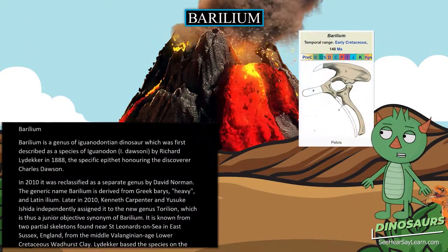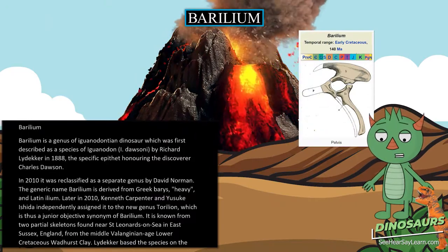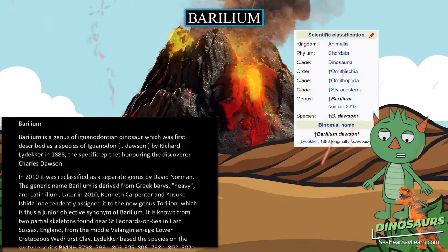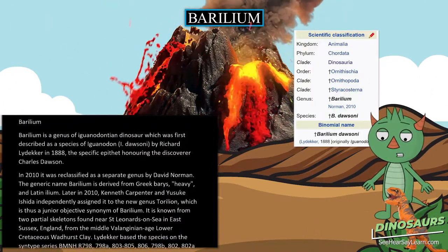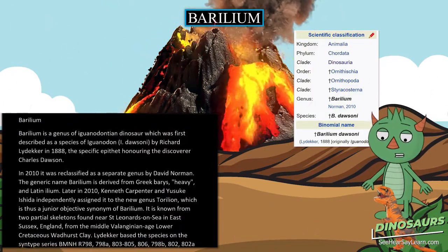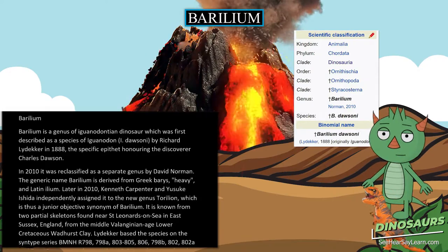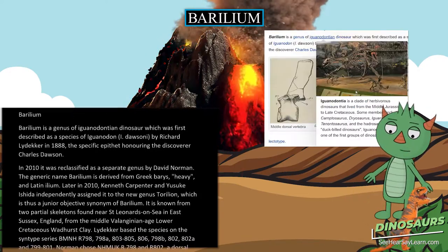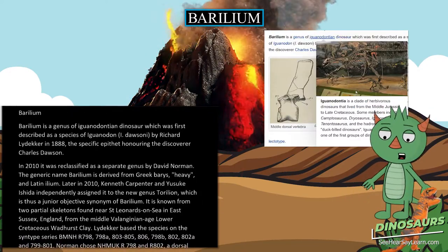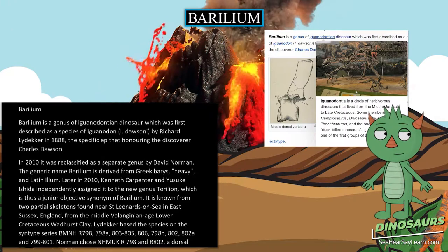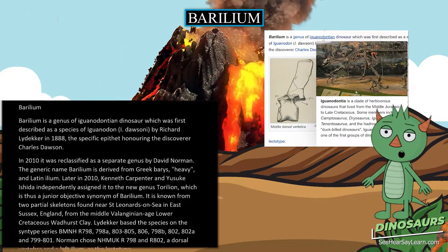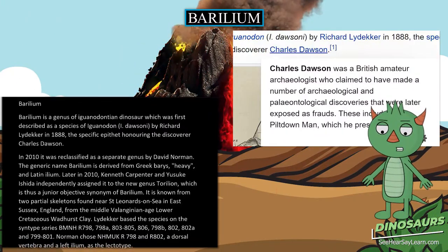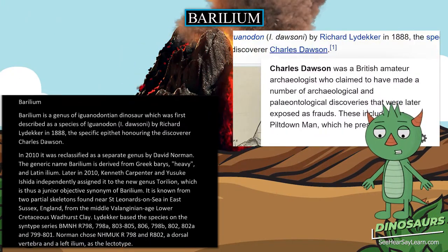Beryllium is a genus of Iguanodontian dinosaur which was first described as a species of Iguanodon by Richard Lydekker in 1888, the specific epithet honoring the discoverer Charles Dawson. In 2010, it was reclassified as a separate genus by David Norman.